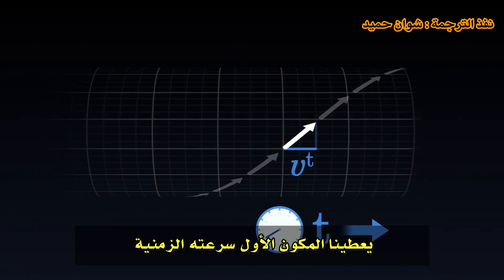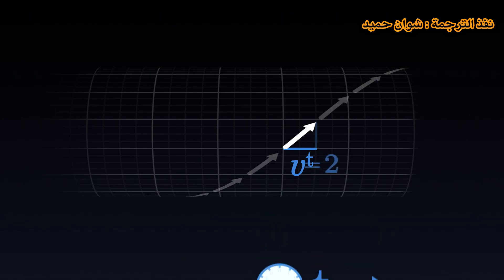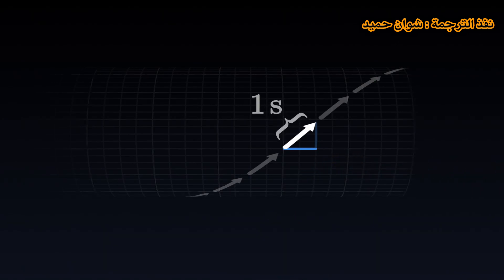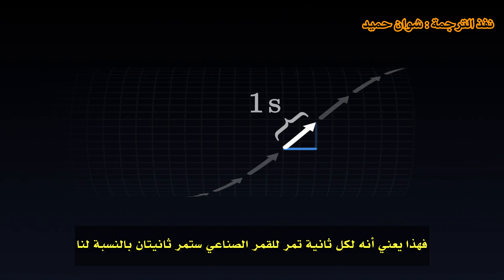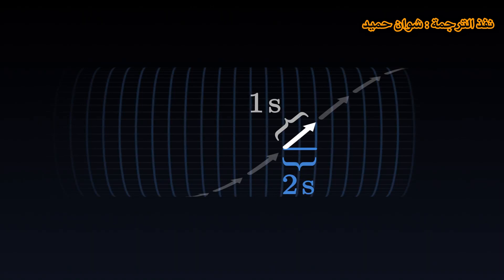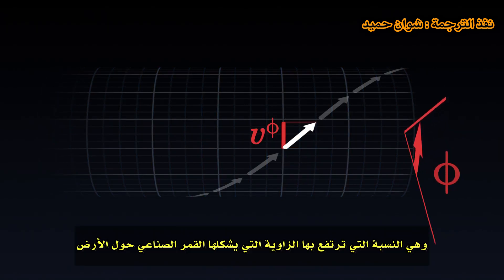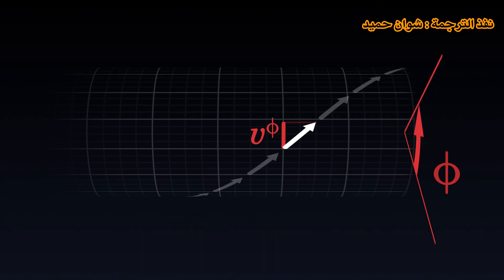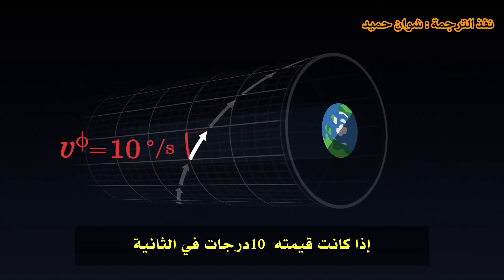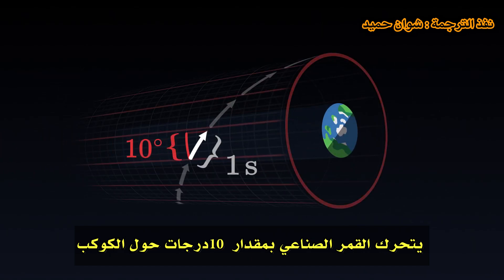The first component gives us its temporal speed — it is the rate at which our time passes compared to the satellite's proper time. If this value is 2, for example, this means that for every second that passes for the satellite, 2 seconds will have passed for us. The second component represents its angular speed: the rate at which the angle formed by the satellite around the Earth increases. If its value is 10 degrees per second, this means that for each second of proper time, the satellite moves 10 degrees around the planet.